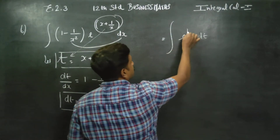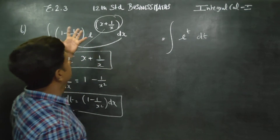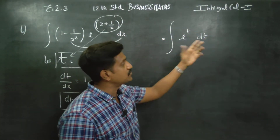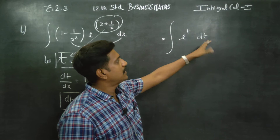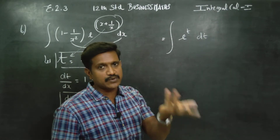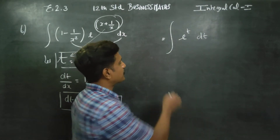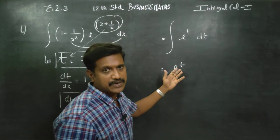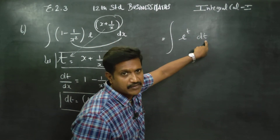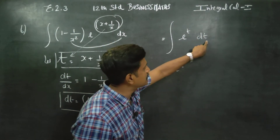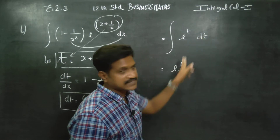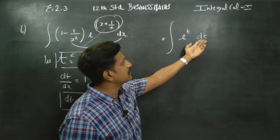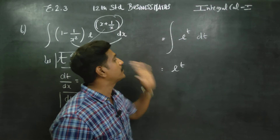We will define e to the power t. Since t equals x plus 1 by x, and dt equals the required expression in dx, the integral becomes the integral of e to the power t, which equals e to the power t.